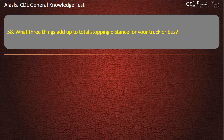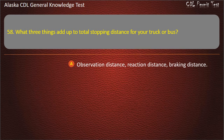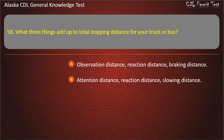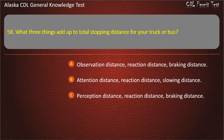Question 58. What 3 things add up to total stopping distance for your truck or bus? Observation distance, reaction distance, braking distance; attention distance, reaction distance, slowing distance; or perception distance, reaction distance, braking distance. Answer: Perception distance, reaction distance, braking distance.